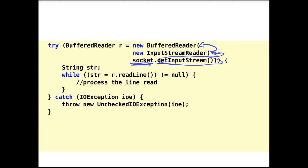The BufferedReader adds the functionality to read chunks of characters, not just single characters. In particular, the BufferedReader stored in variable r has the method readLine, which can be used to read all characters up to a newline — very useful. We read one line of characters and store the read line in the string str. The readLine method returns null if there is nothing more to read, which is the check in the while loop. If there is nothing more to read, we quit the loop; if there was something to read, we enter the loop and process the data. That's the first simple usage of input streams to read from a socket.